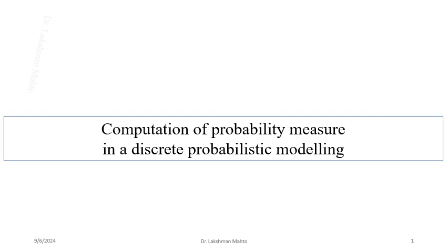We had already seen three basic concepts of probabilistic modeling: sample space, events of interest, and probability measure definition. Now we will start to compute the probability measure of an event. Remember that the formula you had seen in your high school mathematics course would be a totally different approach.